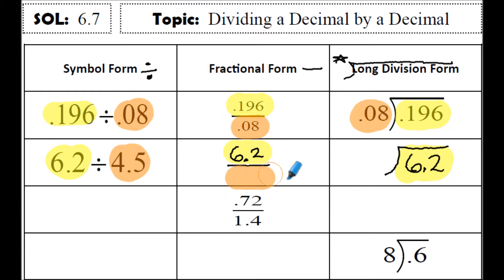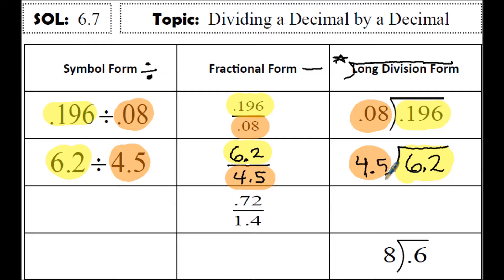The second number is 4 and 5 tenths — that should be in the denominator and on the outside of the long division form.